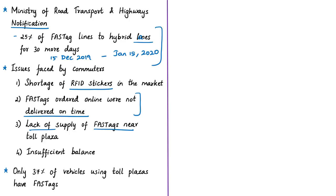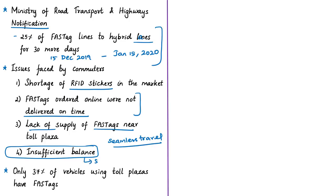Even if a vehicle has a FASTag affixed, insufficient balance defeats the objective of seamless travel, requiring hard cash payment at toll booths. The news article mentions that as of now only around 37% of vehicles using toll plazas have FasTags. Solutions include: timely delivery of FasTags through online and offline channels; providing FasTags near toll plazas for quicker adoption; and citizens purchasing FasTags promptly while ensuring adequate balance. There is also some laxity in adhering to the standards specified by the government, requiring commitment from citizens as well.